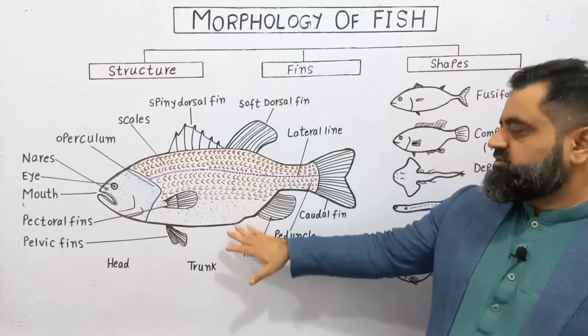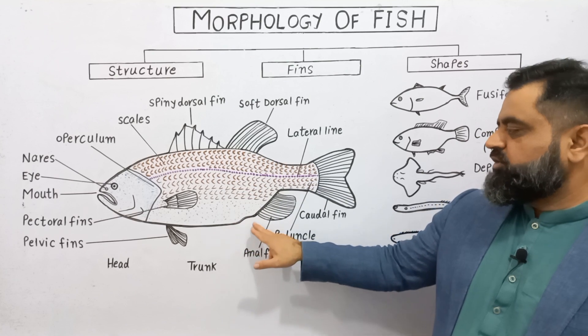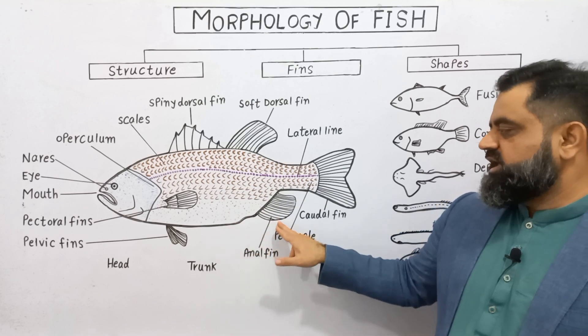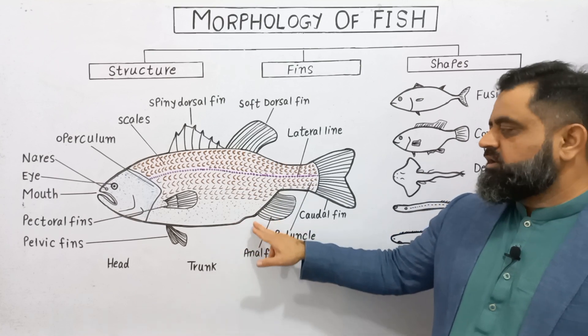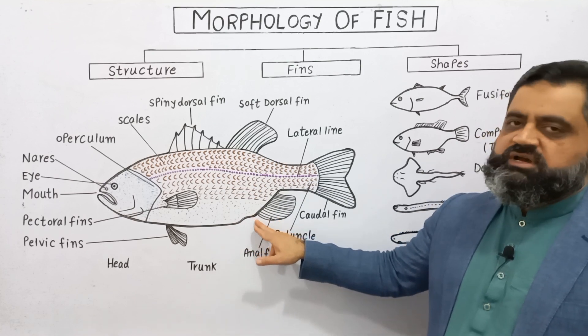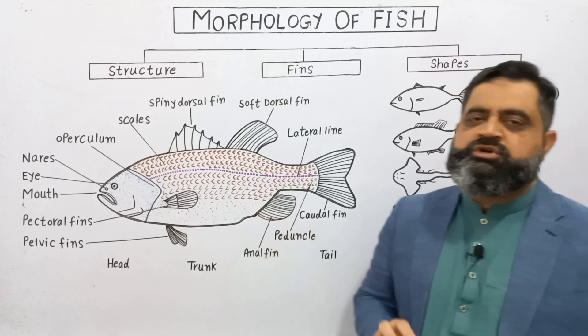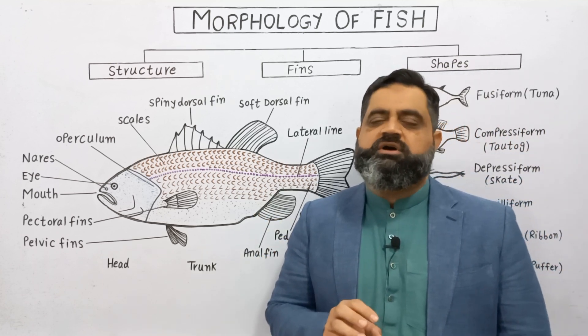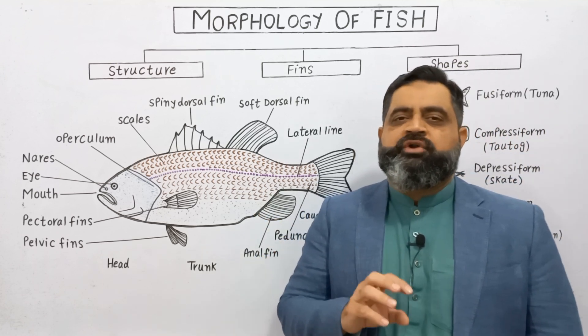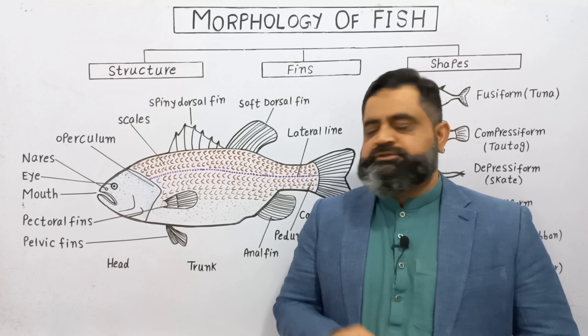On the ventral side, there is an anal fin located just near the anus, which helps with dispersal and the reproductive organs.